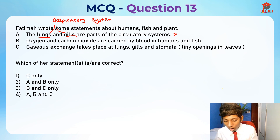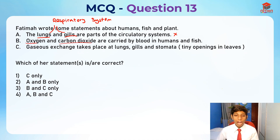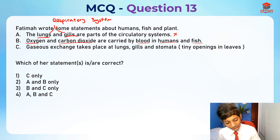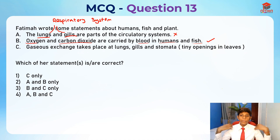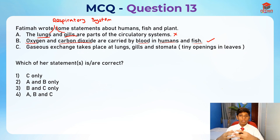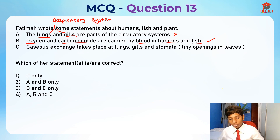Statement two: oxygen and carbon dioxide are carried by the blood in humans and fish. This is actually true. Oxygen and carbon dioxide are carried by our blood in the circulatory system. The circulatory system transports oxygen to all parts of the body and takes out carbon dioxide to be released as we breathe. So this statement is true.